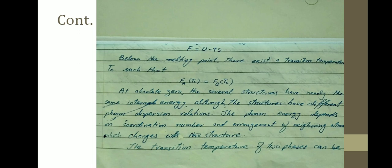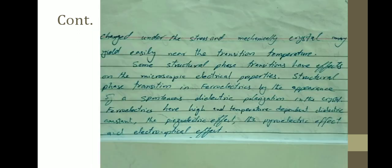Below the melting point there exists a transition temperature Tc such that F_A of Tc equals F_B of Tc. At absolute zero, the several structures have nearly the same internal energy. Although the structures have different phonon dispersion relations, the phonon energy depends on coordination number and arrangement of neighboring atoms, which changes with the structure. These are the structural changes of the solid phase and are not the melting and boiling. During this phase of solid, with the increase of temperature, the crystal changes from one crystallographic phase into new phases to attain the minimum energy.